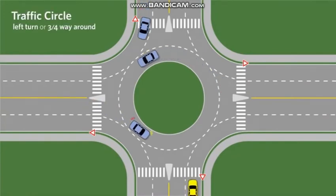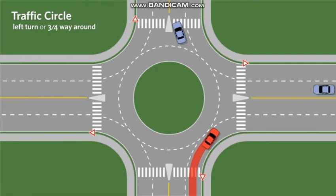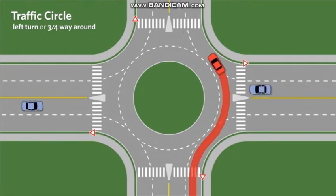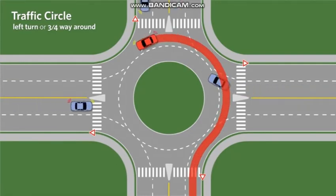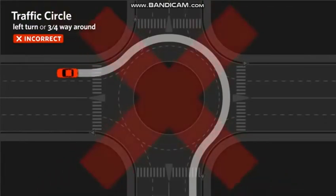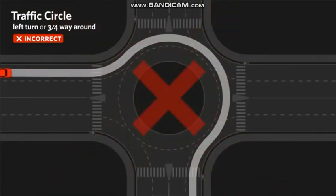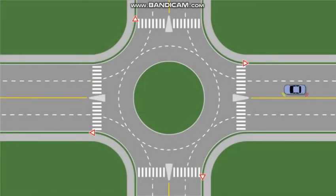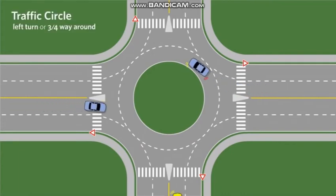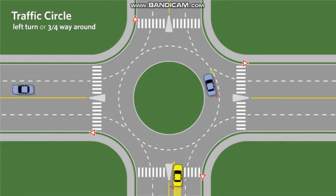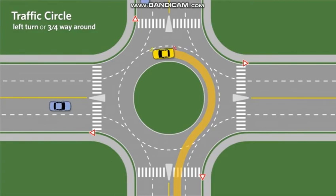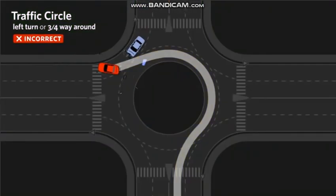For a three-quarter of the way around, it is unsafe to enter or proceed around the circle from the right or outside lane. Another mistake is to change lanes in the traffic circle. When you enter from the left or inside lane, do not change lanes in the circle and exit in the right or outside lane, as this may result in cutting other vehicles off or causing a collision.